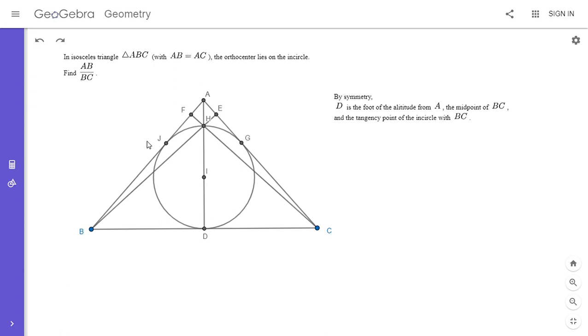And then I denoted a couple other points in the figure too. The incenter I, which clearly lies on AD, the orthocenter H, and then the other points of tangency and other points of altitude.